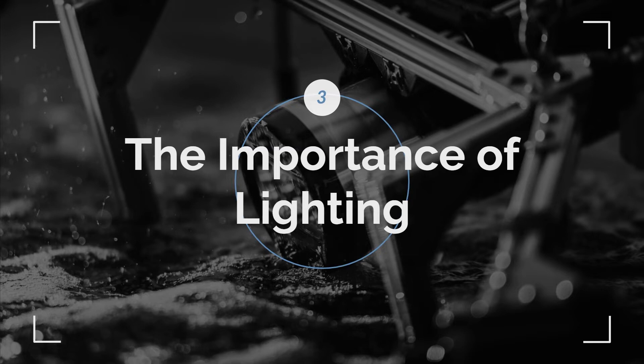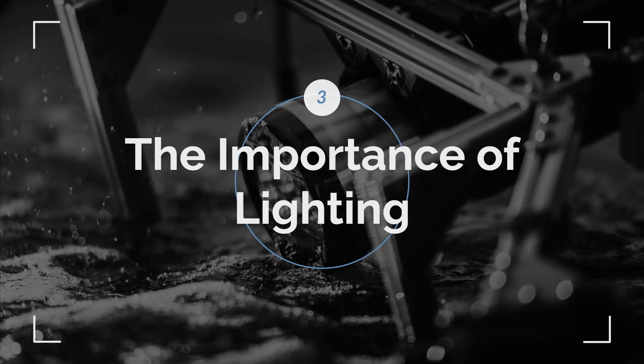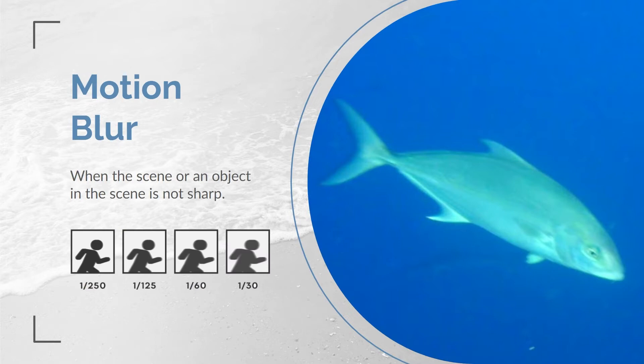The deep ocean is a low light environment — ambient light decreases the deeper you go. In order to capture quality subsea videos and images, you'll need the right lighting. Without it, you won't get the results you're looking for in marine research or offshore surveys. In underwater systems, power availability matters, and in a camera system the lights use the most power. Select LEDs and strobes that have a high lumen output per watt of power. More lights are not always better, and floodlights are not always better — you need the right amount of light directed where you need it.